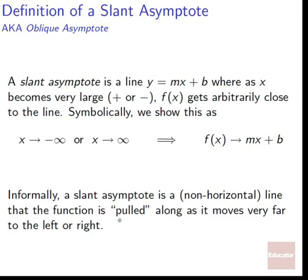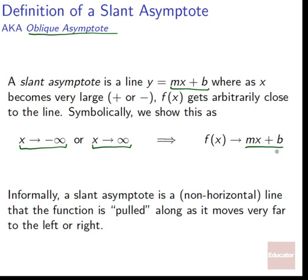A slant asymptote — also called an oblique asymptote — is a line y equals mx plus b, where as x becomes very large (positive or negative), f of x gets arbitrarily close to that line. Symbolically: as x approaches negative infinity or positive infinity, f of x will approach mx plus b. Informally, a slant asymptote is a non-horizontal line that the function is pulled towards as it moves very far to the left or to the right.